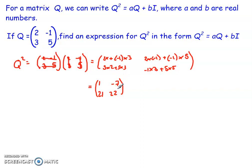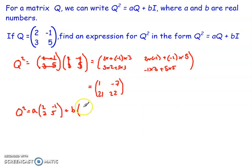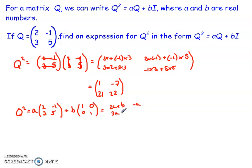Now I want to write this in the format Q² = aQ + bI. Expanding: a×[2,−1;3,5] plus b×[1,0;0,1] gives entries: top-left = 2a+b, top-right = −a, bottom-left = 3a, and bottom-right = 5a+b.